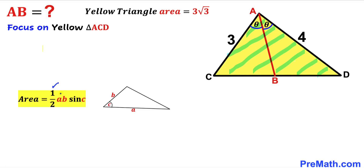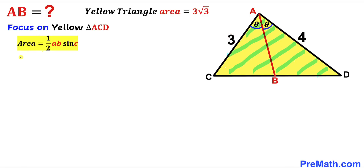In this formula, sides A and B and angle C is the angle between them. In our case the side lengths are 3 and 4, and the angle between them is 2 theta. So filling in: 3√3 = ½ × 3 × 4 × sin(2θ), which simplifies to 3√3 = 6 × sin(2θ).